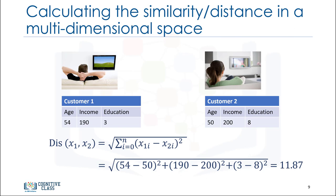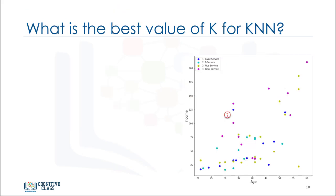There are other dissimilarity measures as well that can be used for this purpose, but as mentioned, it is highly dependent on data type and also the domain that classification is done for. As mentioned, k in k nearest neighbors is the number of nearest neighbors to examine. It is supposed to be specified by the user. So, how do we choose the right k?